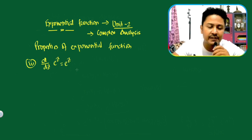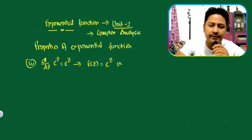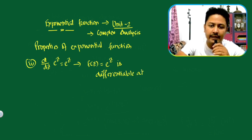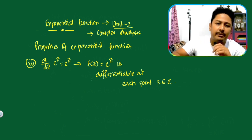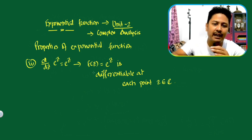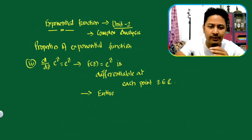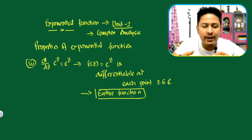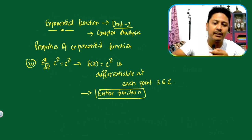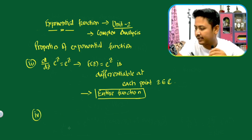So the exponential function f(z) = e^z is differentiable at each point z belonging to the complex plane C — that means the entire complex plane. A function that is differentiable at each point of the entire complex plane is called an entire function.